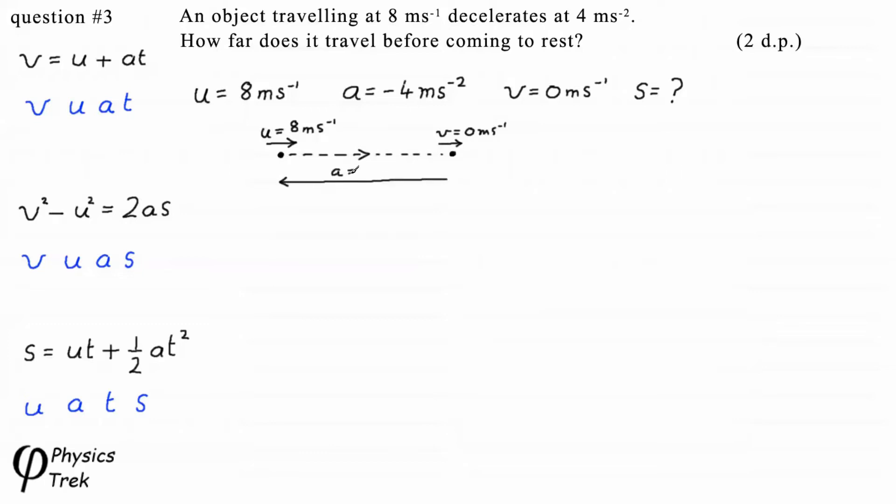A, the acceleration, is a deceleration in the opposite direction, minus 4 metres per second per second. And we have to find the distance S.